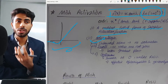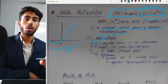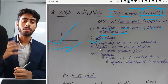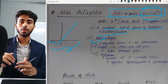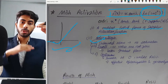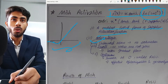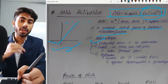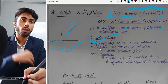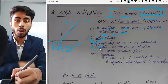The first advantage is that mish activation is unbounded, meaning it does not face the problem of saturation. In sigmoid activation there was a problem of saturation because values were squashed between zero and one. Here, for increasing values of x you get increasing output, so it does not face the problem of bounding and therefore does not face the problem of saturation.